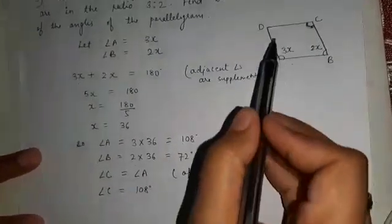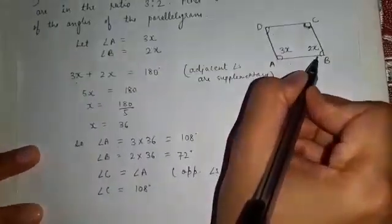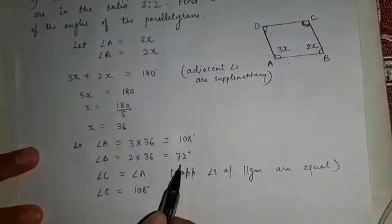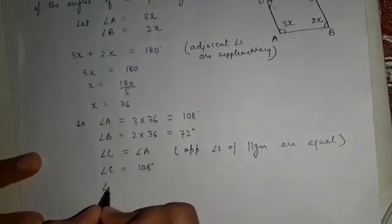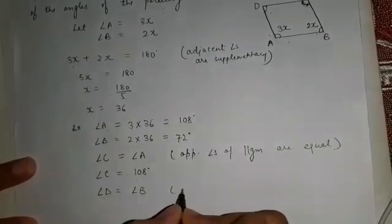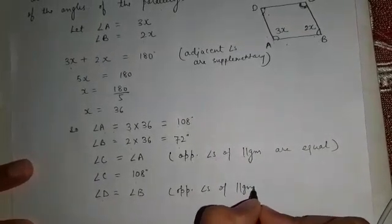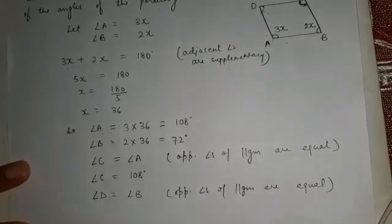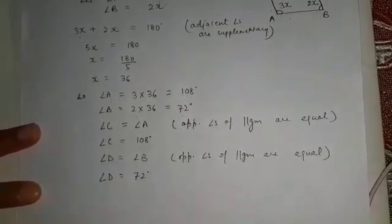Now the last angle — angle D. Angle D is opposite to angle B. If angle B is 72 degrees, that means angle D is also 72 degrees. So angle D is equal to angle B, with the same reason: opposite angles of a parallelogram are equal. Angle D is 72 degrees.